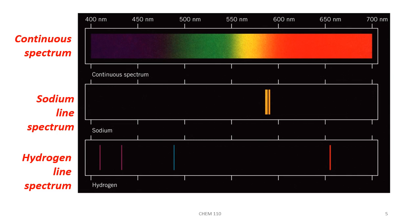At the very top, we see a continuous visible spectrum that would be produced by the sun or something like an incandescent lamp. Sodium has quite a few lines, but most of them are very dim; the two major ones appear in the yellow region. For hydrogen, notice there are four lines in the visible portion of its line spectrum. Hydrogen also has other emissions in the ultraviolet and infrared portions of the spectrum, but we can't actually visualize those lines.